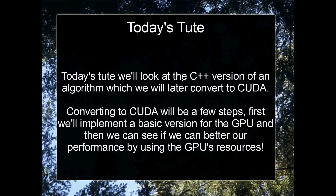So today, what we're going to do is look at a C++ version of an algorithm, because realistically this is probably what you're going to be doing in CUDA — you'll have an algorithm somewhere that you want to speed up, maybe some bottleneck in your code. We're going to convert this C++ algorithm from the CPU over to the GPU using CUDA, and after a basic conversion, we'll think about GPU resources and see if we can get an even bigger performance gain.